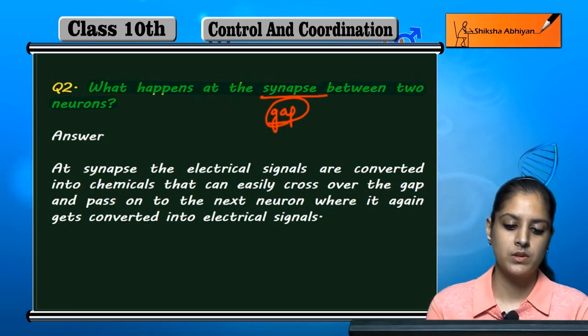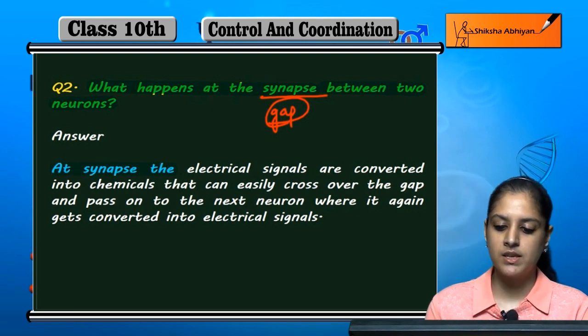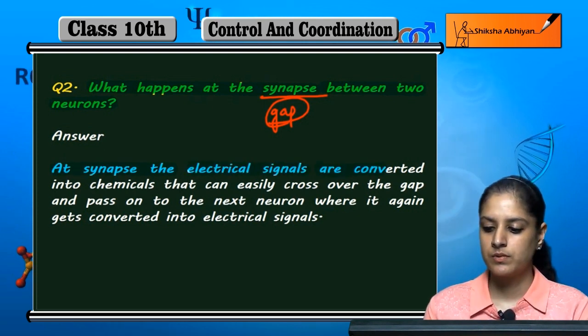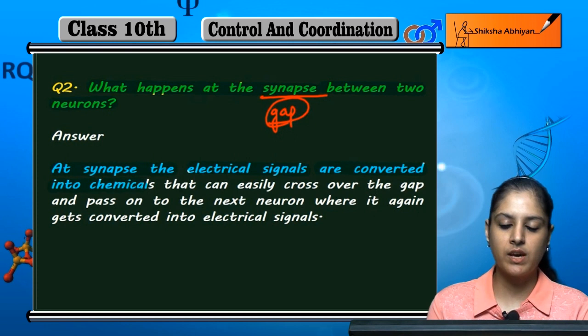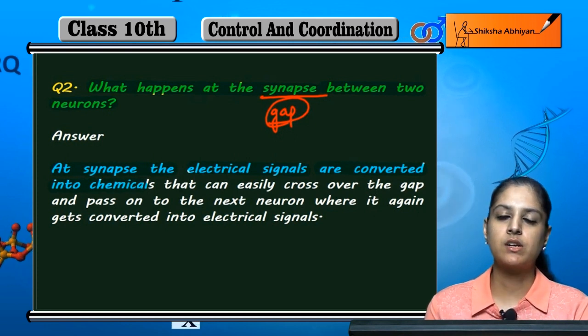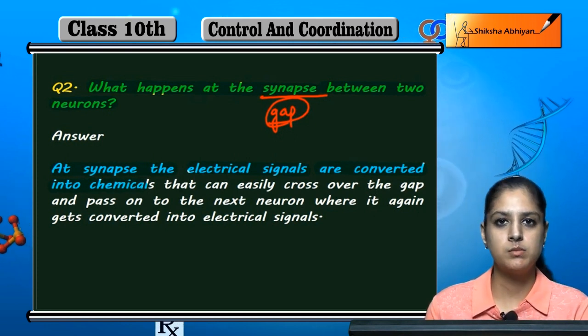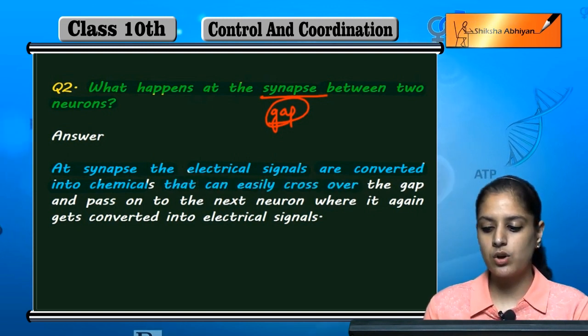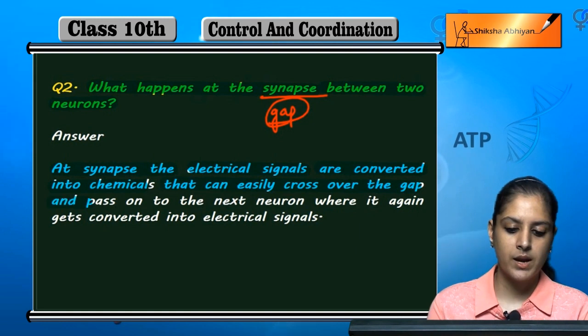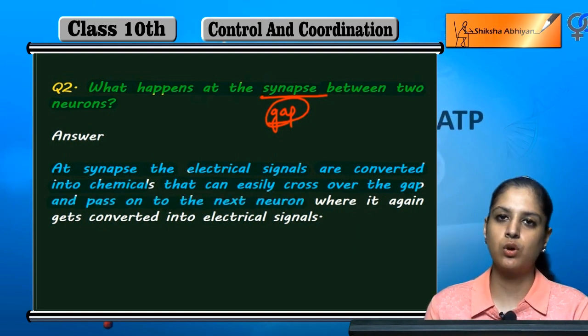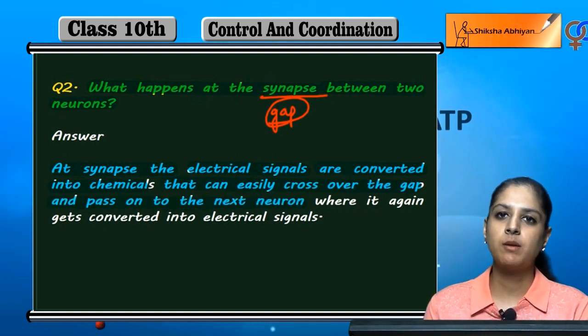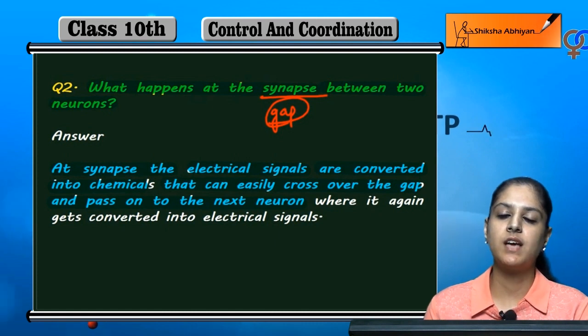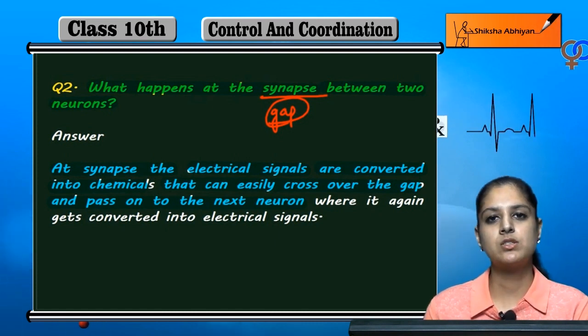At the synapse, the electrical signals are converted into chemicals that can easily cross over the gap and pass on to the next neuron. The chemicals cover the gap and go to the next neuron.